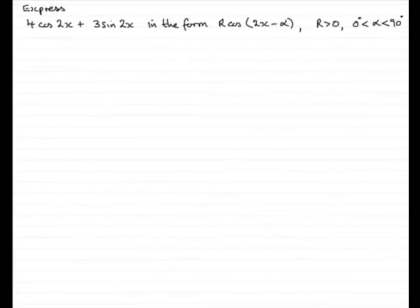Now, in this part of the question, we're asked to express 4 cos 2x plus 3 sine 2x in the form r cos 2x minus alpha, where r is greater than 0, and alpha is an angle that lies between 0 and 90 degrees, an acute angle in other words.